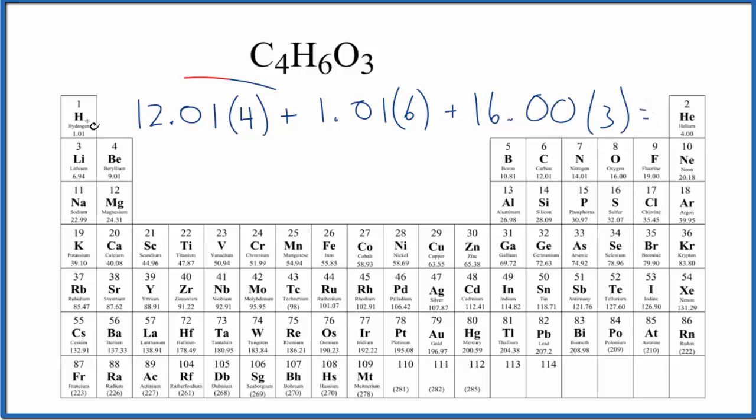So what we'll do is we multiply each of these, and then we add them all together. We end up with 102.10, and the units are grams per mole.